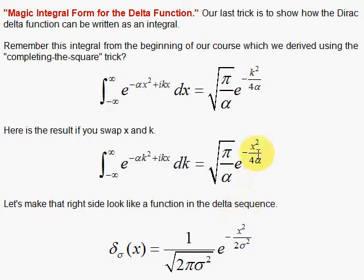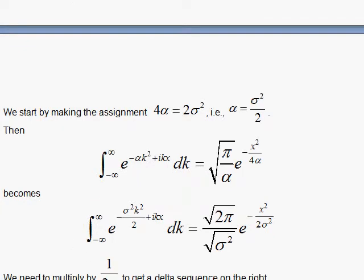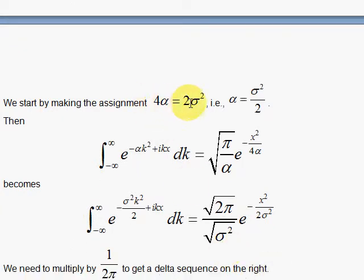And to make the right side agree with our delta sequence Gaussian, I need to make 4 alpha equal to 2 sigma squared. That's my first step. So let's do that. So we come down here and we make the assignment 4 alpha is 2 sigma squared. And therefore, the 4 alpha here becomes 2 sigma squared, which is what I need. And notice the alpha down in here will become sigma squared over 2. And by flipping the alpha, since we're dividing, we get the 2 up with the pi and the sigma squared in the denominator. That's looking very close to what we need.